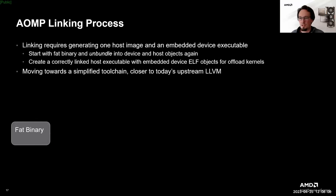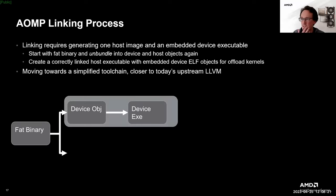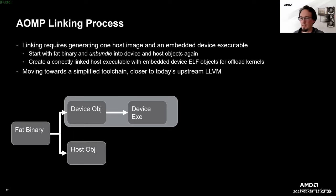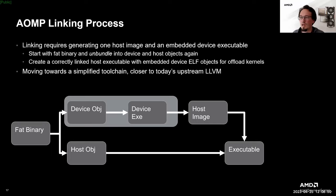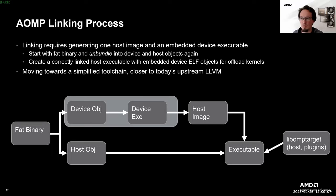The linking process requires generating one host image and an embedded device executable. We start with the fat binary and first unbundle it into device and host objects. The device object goes through potentially device-specific tools to create a device executable, which is wrapped into a correct ELF image. The linker then creates a correctly linked host executable in which it embeds the ELF image containing the different images for each device kernel. Those images can later be loaded in the libomptarget plugins and executed on the specific device. The linker also links any required libraries such as libomptarget and libC++.